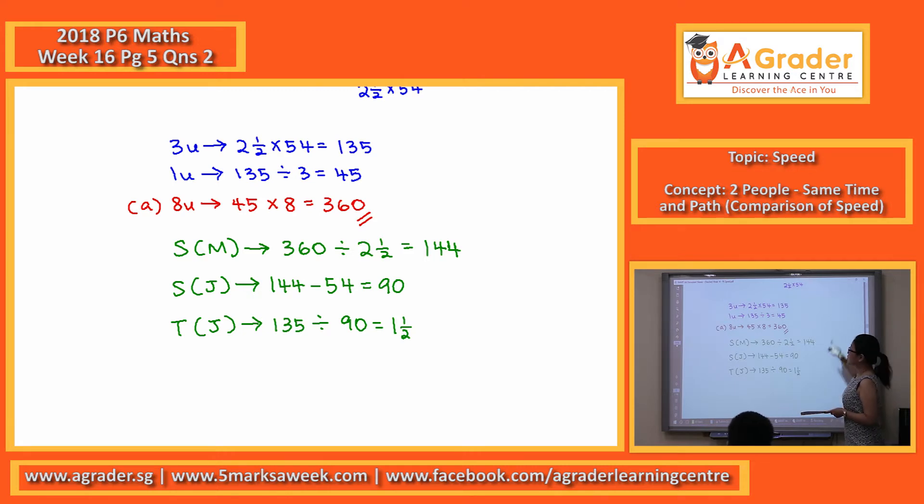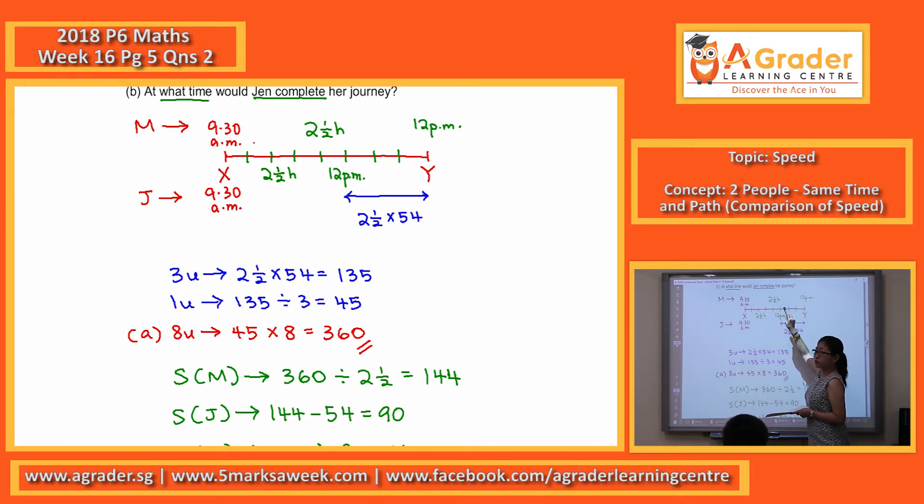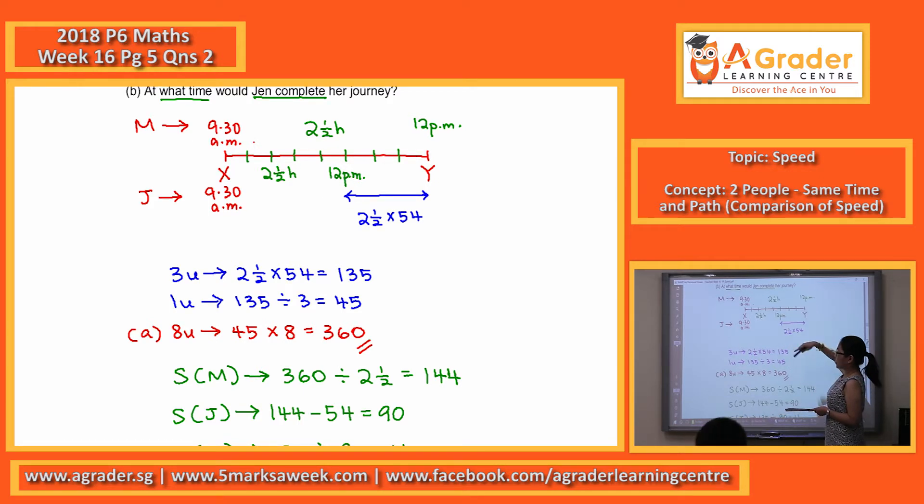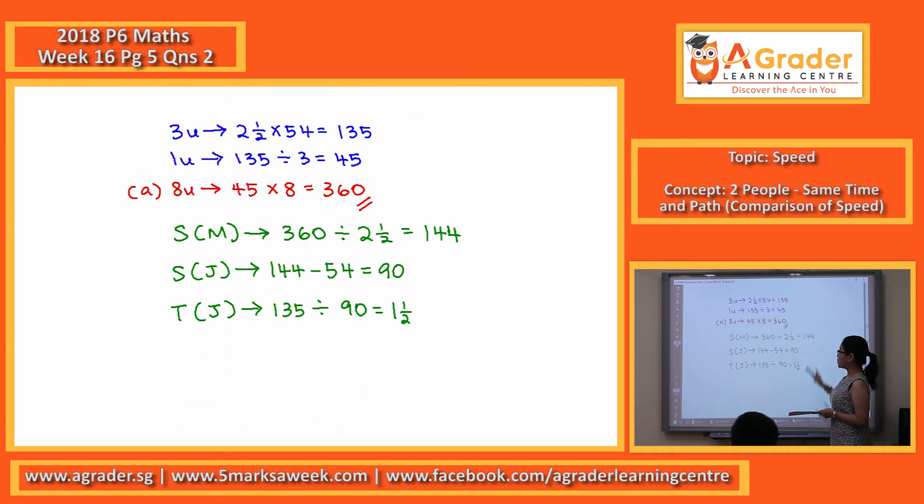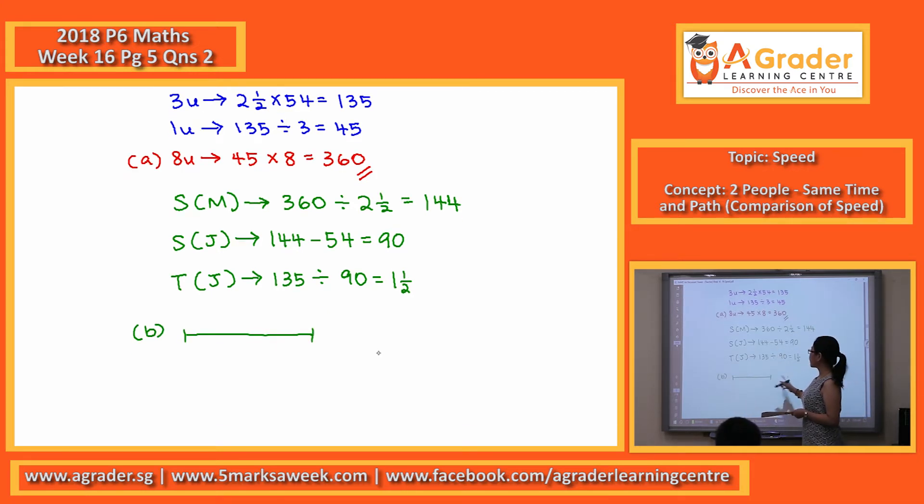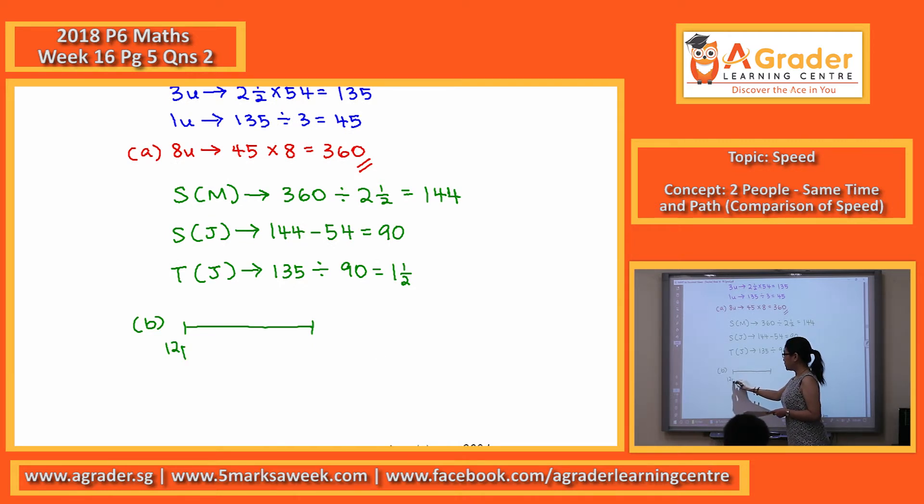So this one and a half hours, take note, you will actually be counting from 12 to one and a half hours later, then you will get the answer. So please present your answer using the timeline, 12 p.m., one hour later, 1 p.m. Half an hour is actually 30 minutes, so 1:30 p.m.